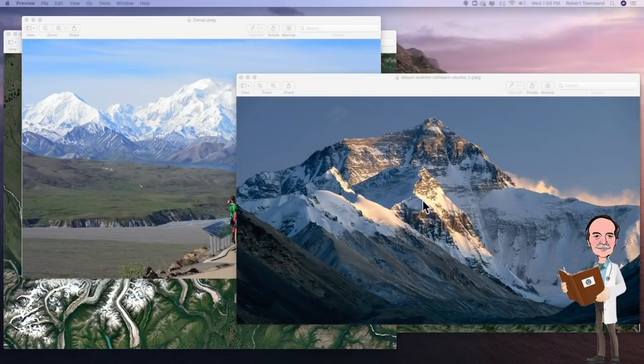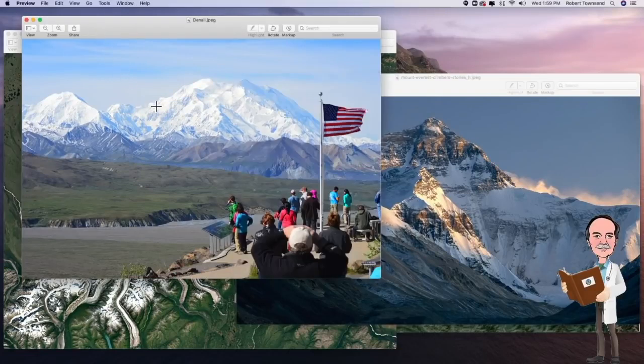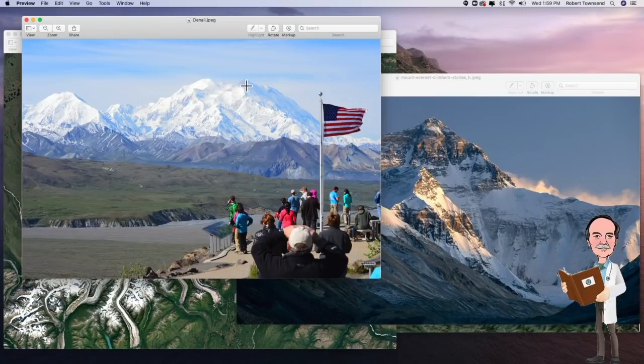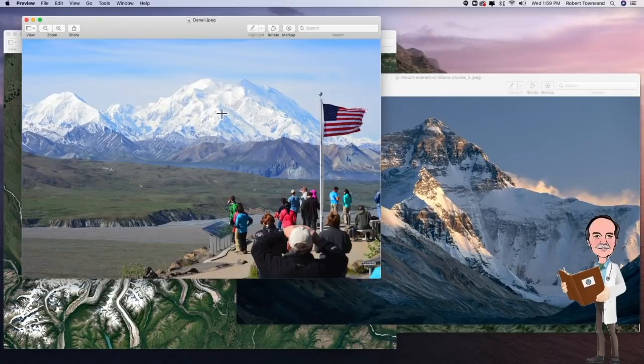Right here we have the tallest mountain in the world. This is Mount Everest. It's 29,000 feet high. This is Denali or Mount McKinley in Alaska. It's 20,000 feet high. So, 9,000 feet of elevation separates Mount Everest from Denali.